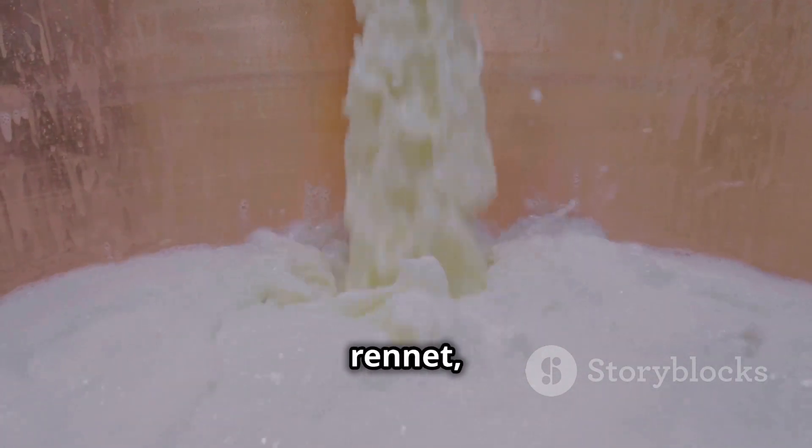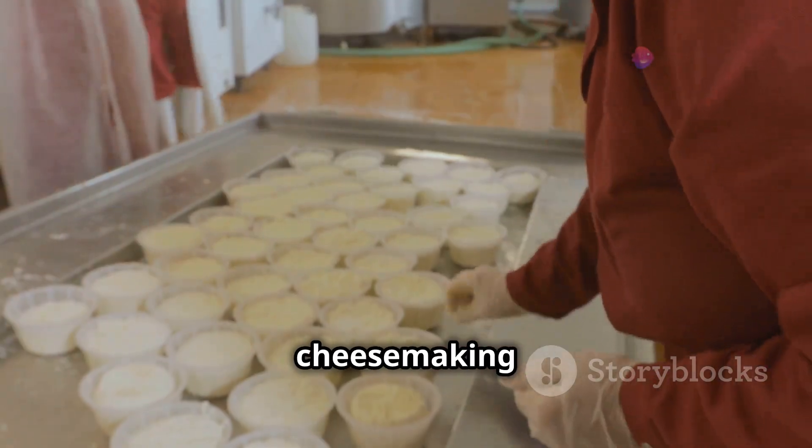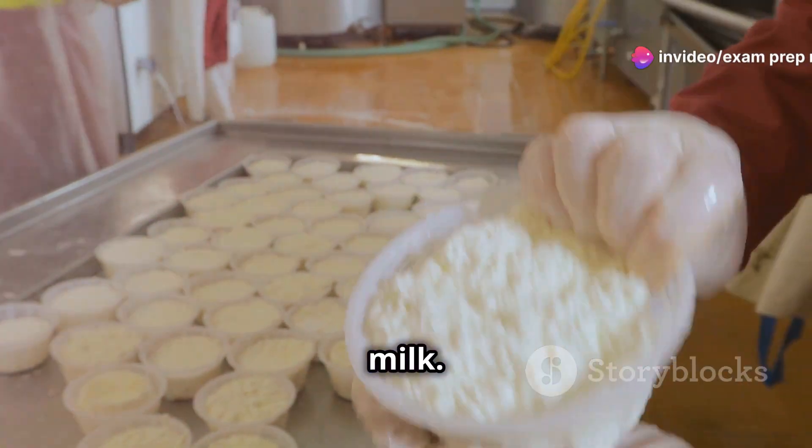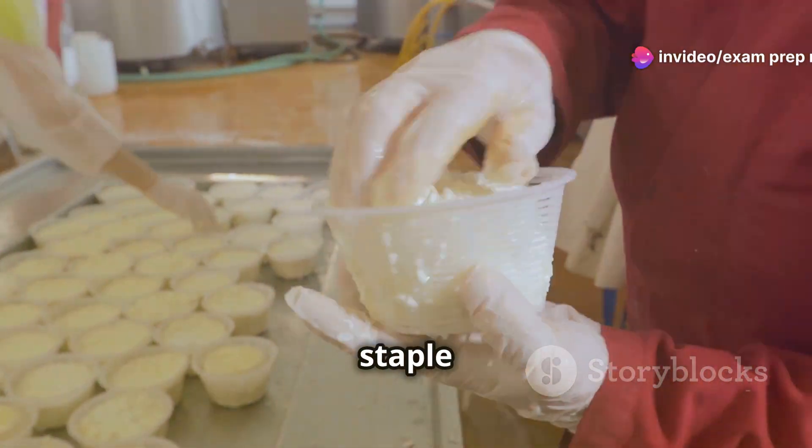For example, the enzyme rennet, found in the stomach lining of calves, is used in cheese making to coagulate milk. This process transforms liquid milk into solid cheese, a staple in many diets.